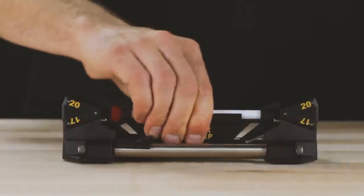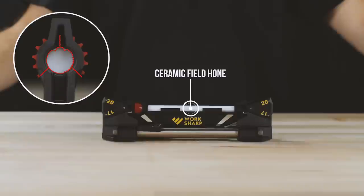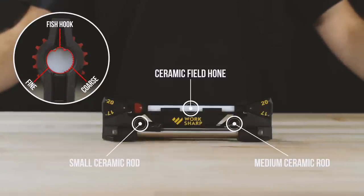Angle guided ceramic hone includes a three position large rod with a small and medium ceramic rod for serrations.